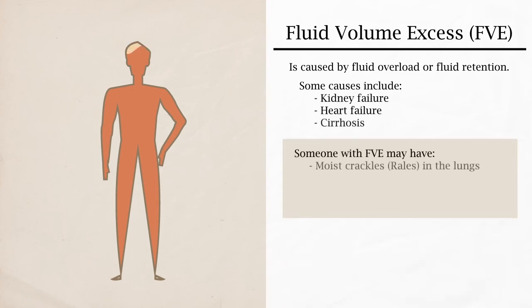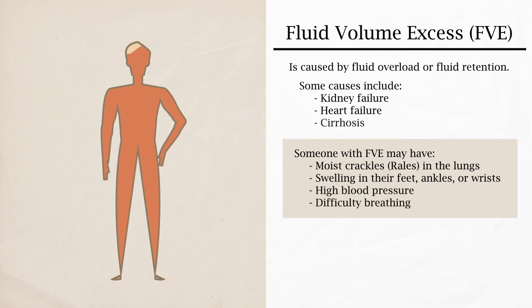Someone with FVE may have moist crackles, rails, in the lungs, swelling in their feet, ankles, or wrists, have high blood pressure, or have difficulty breathing.